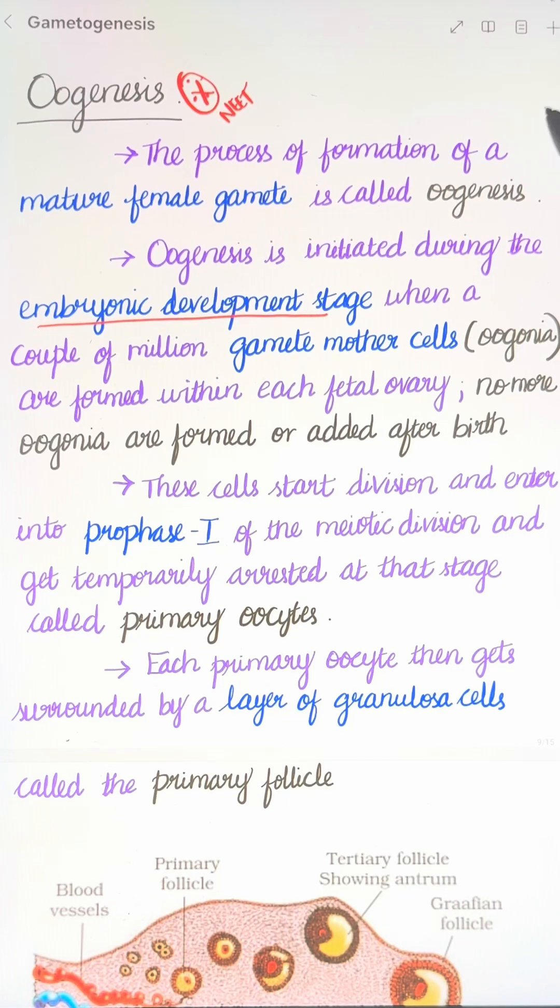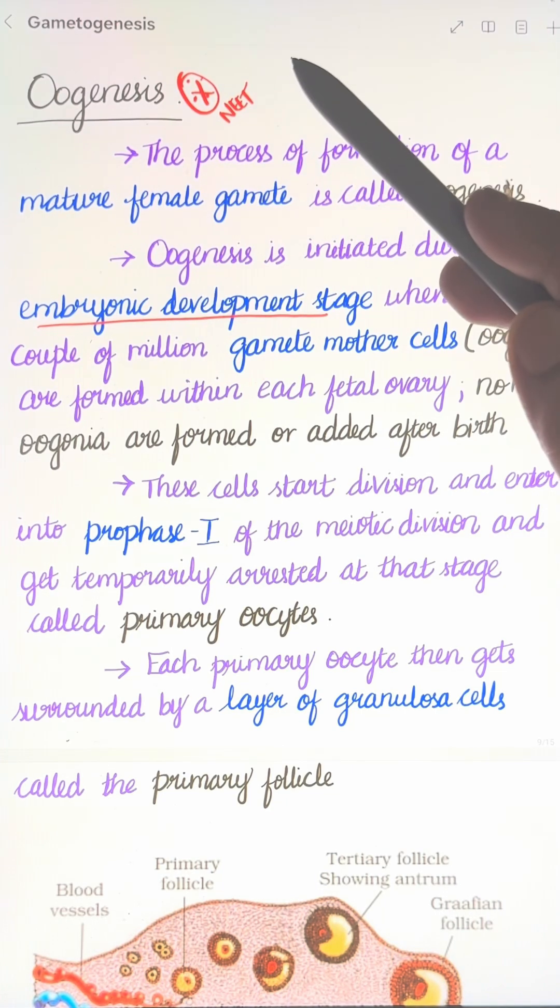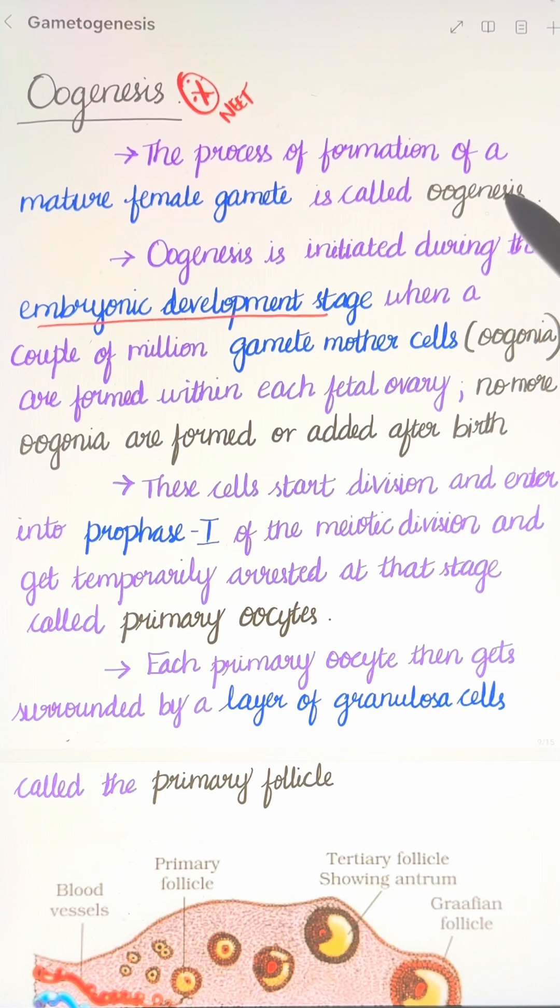Hello students, in this video on Class 12 Chapter 2 Human Reproduction, oogenesis is the process of formation of a mature female gamete, that is, the ovum.